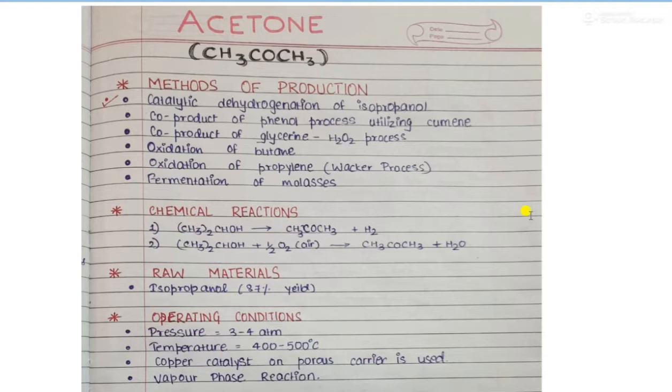The operating conditions for this reaction are: the pressure is about 3 to 4 atm and the temperature is 400 to 500 degree Celsius. The copper catalyst, or we can also use brass as a catalyst over a porous carrier, and it is a vapor phase reaction.